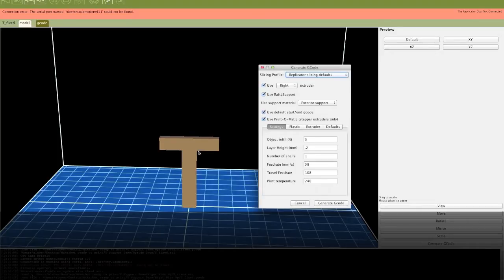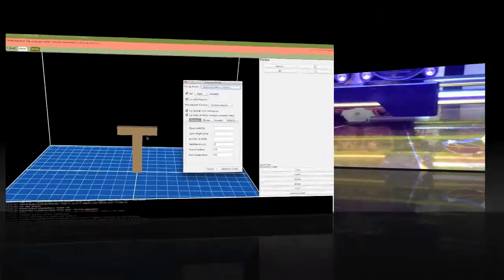So when I come back, I'll show you the printer printing first the T upside down without support and then the T right side up with the support.